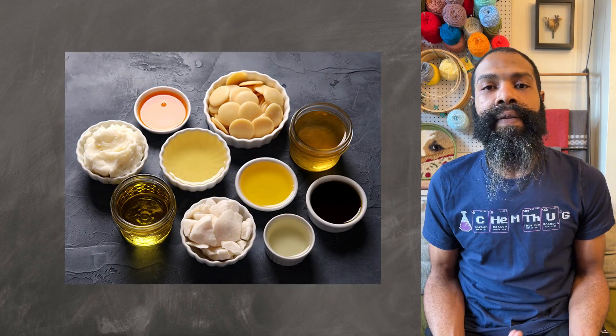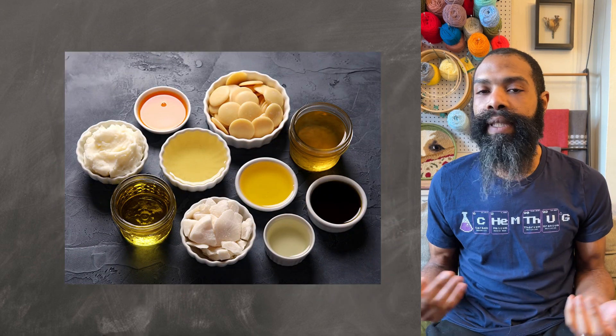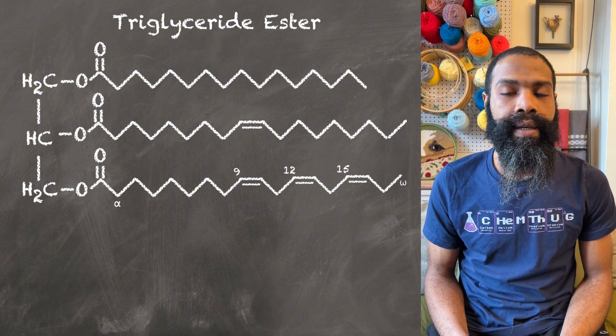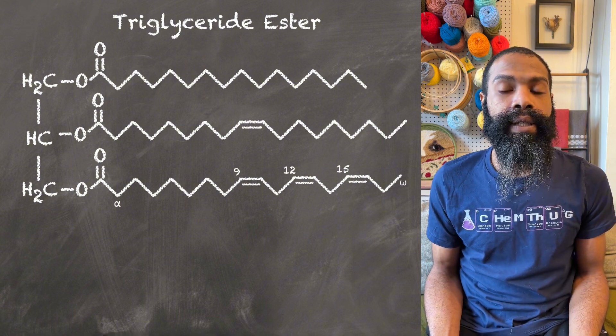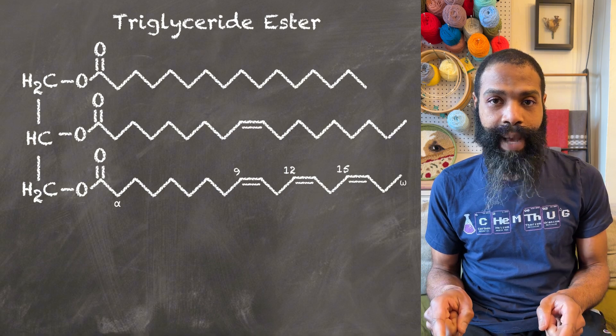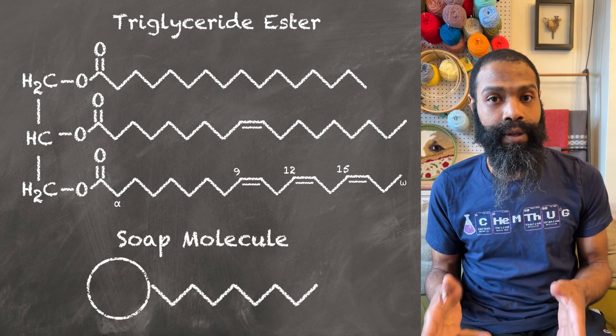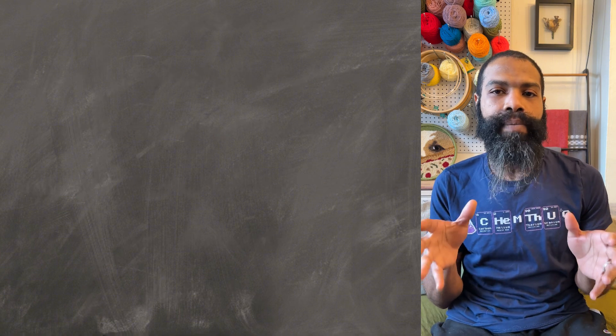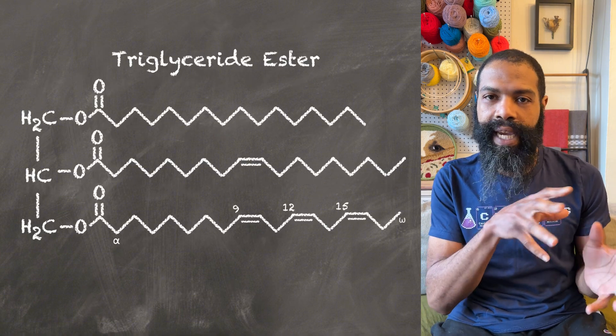This is where the fats and oils come in. Fats and oils are comprised of a number of different things, but they're mainly made of triglyceride esters, and they look like this. Now, this looks like a complicated molecule, but what you might notice is that there are three sections of this molecule that look a lot like our soap molecules, and that's exactly where they come from. But how do we get this soap molecule off of this chain thing here?